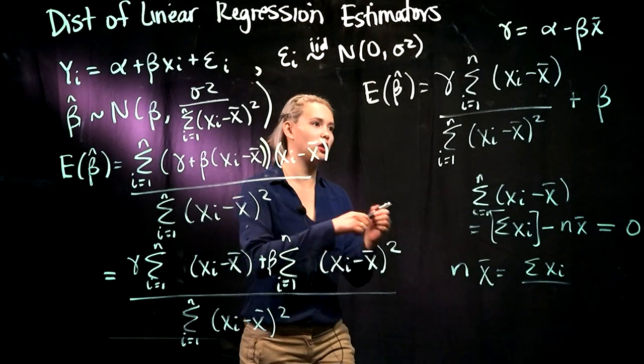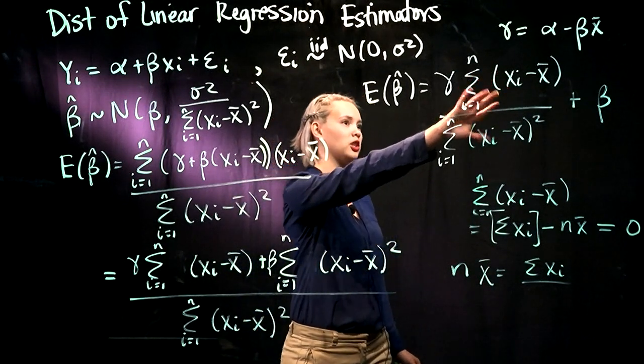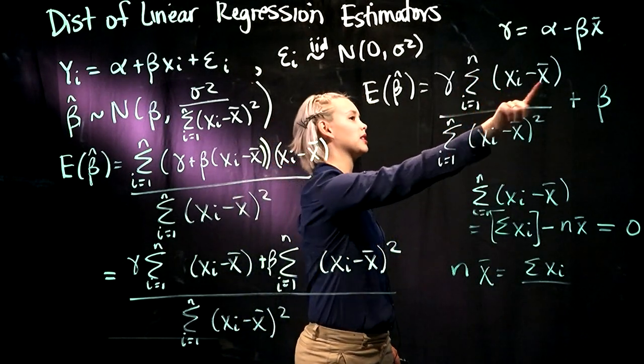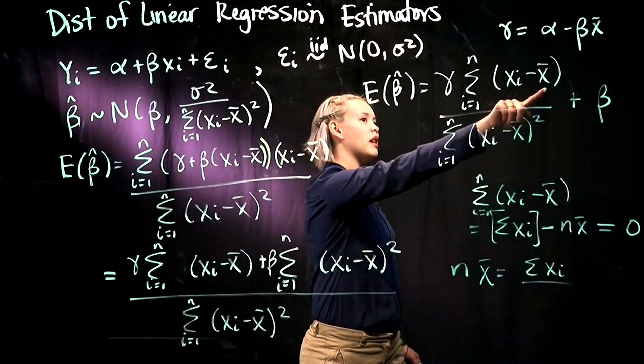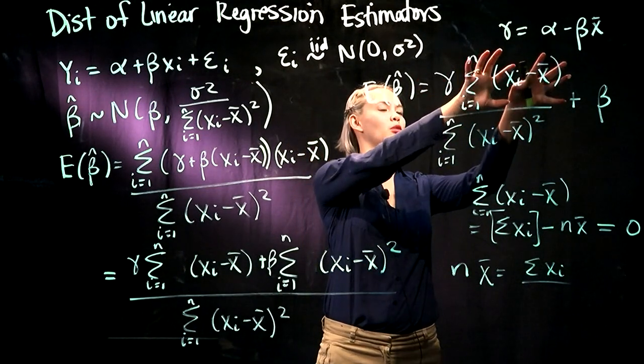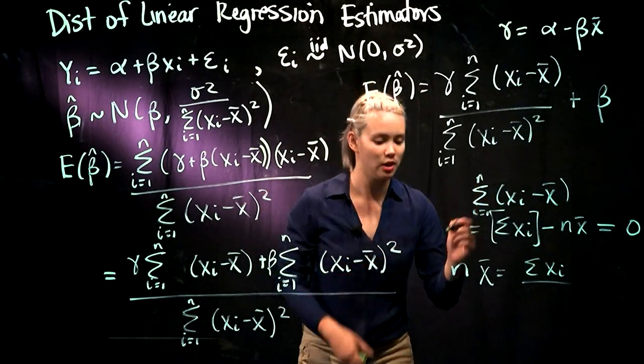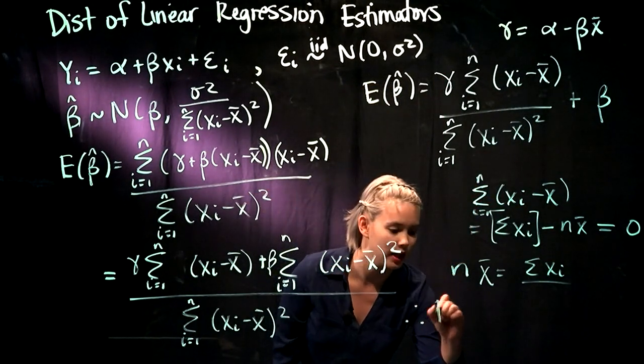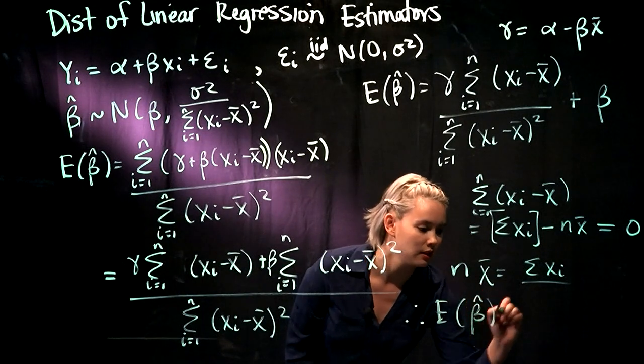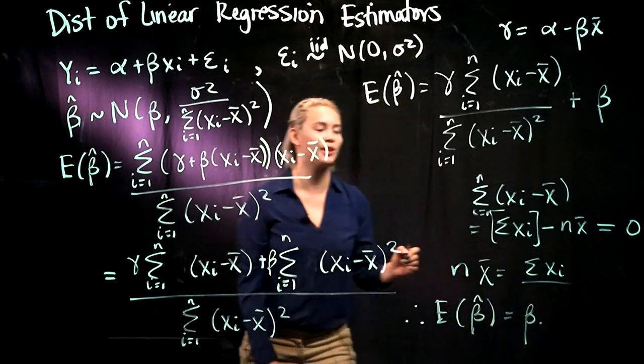So going back up here, using this information that sum of the xi's minus x bar is equal to 0, that means if this is equal to 0, this whole first term just goes away. It's all equal to 0. Therefore, expectation of beta hat is just equal to beta.